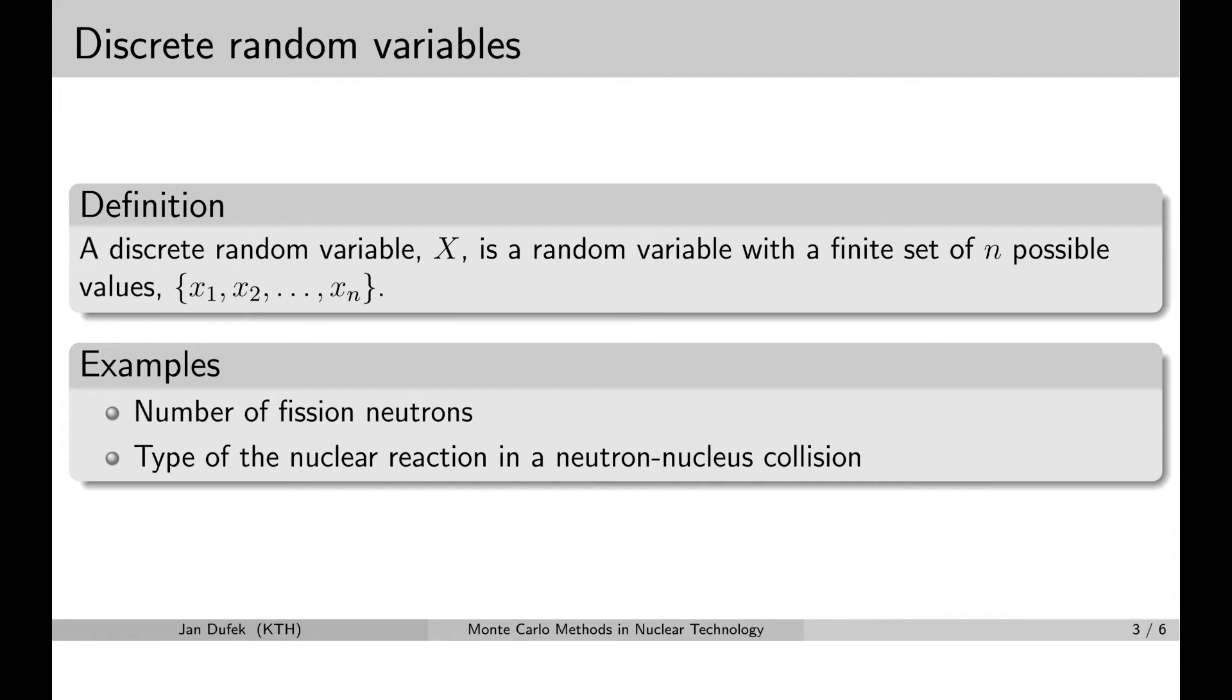There are two groups of random variables, discrete and continuous. Let's have a look at the discrete random variables first. A discrete random variable basically is a variable that can take values from only a finite set.